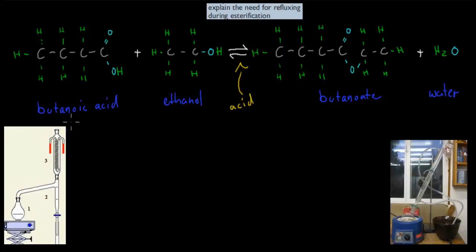In the last video, we talked about what happens if we have, for example, butanoic acid and add that to ethanol. So we have our butanoic acid and our ethanol. We put those together and add some acid as a catalyst, usually sulfuric acid.